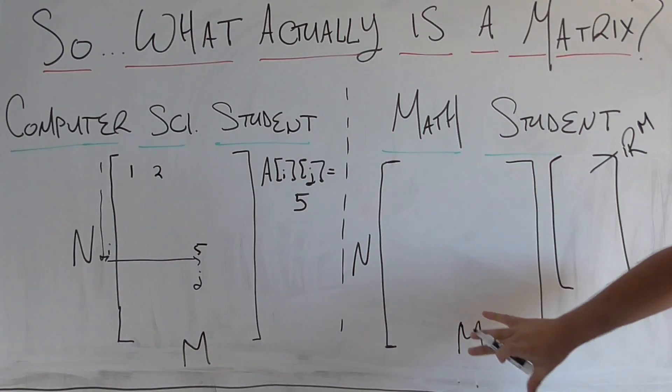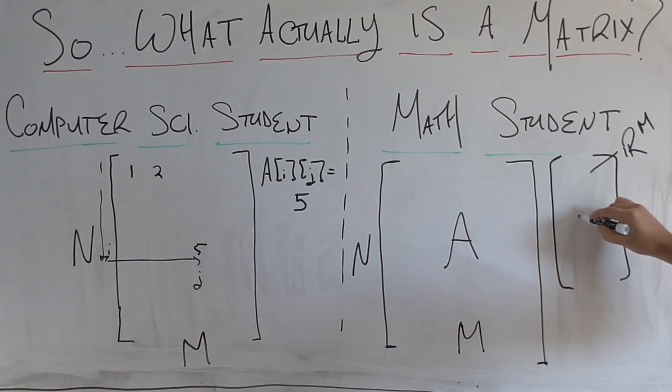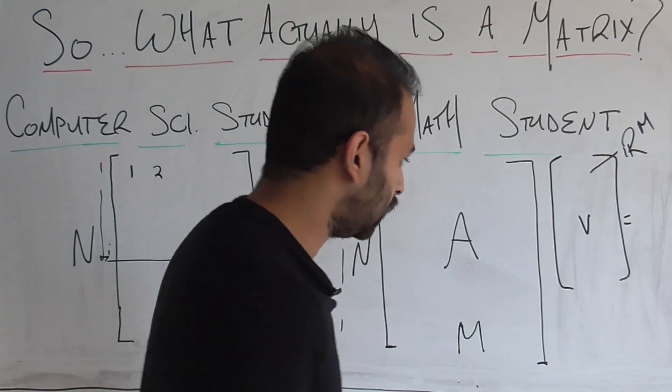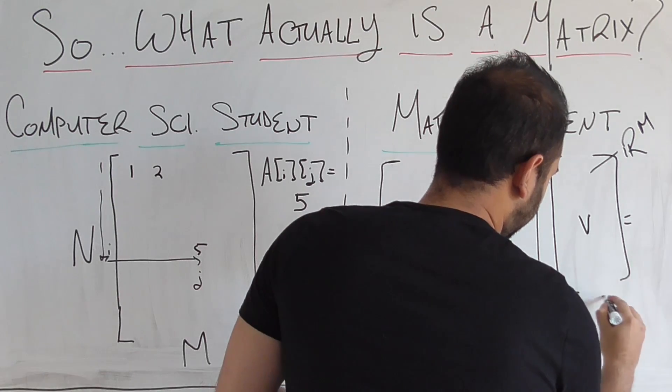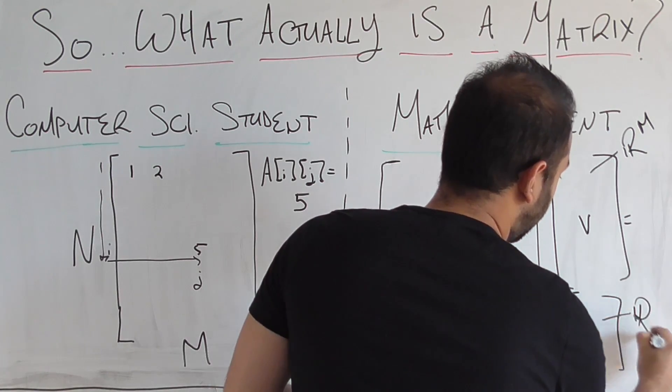If we take a vector like this, that lives in R^m, and we do this multiplication with this matrix A with this vector v, we're going to get back a different vector.